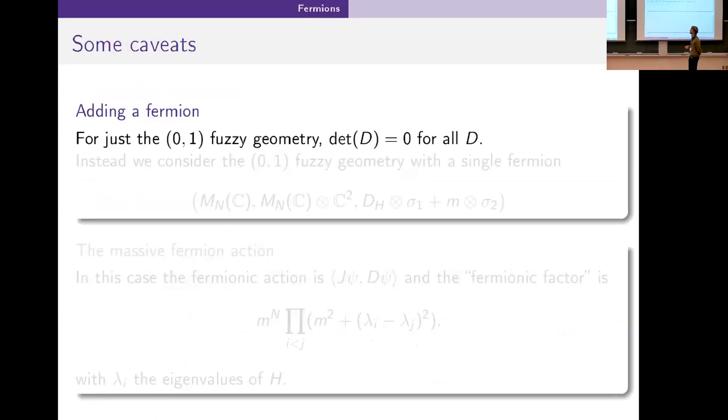The way we fix this is instead of looking at just the (0,1) fuzzy geometry, we look at the (0,1) fuzzy geometry where we give a mass to the fermion. Essentially we build an almost fuzzy geometry in the sense of an almost commutative spectral triple. We tensor on a finite spectral triple where the Dirac operator is just m.